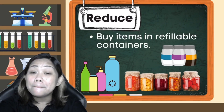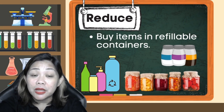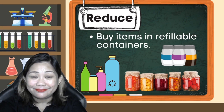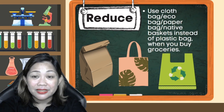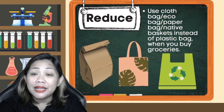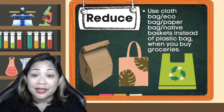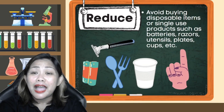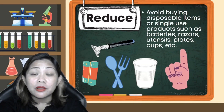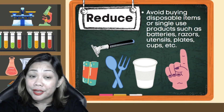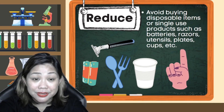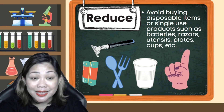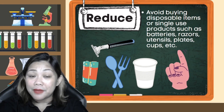Reduce: Buy items in refillable containers. Use a cloth bag, eco bag, paper bag, or native basket instead of plastic bags when you buy groceries. Avoid buying disposable or single-use products such as batteries, razors, utensils, plates, cups, and many more.